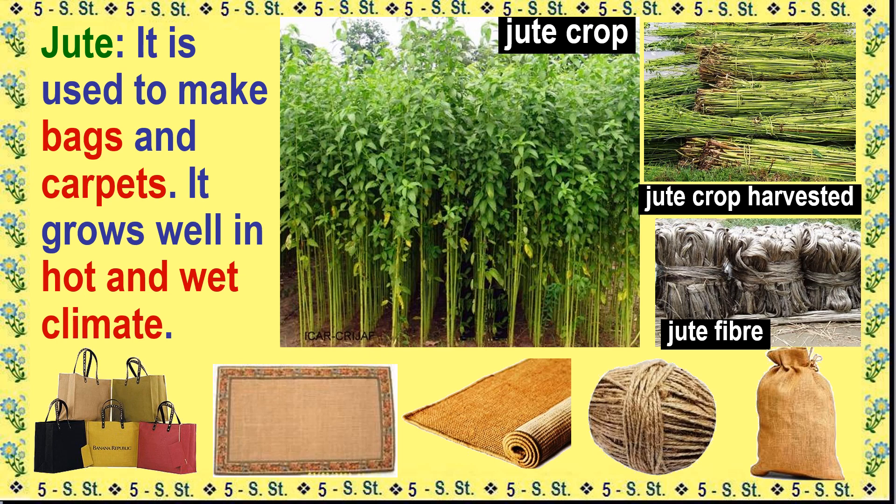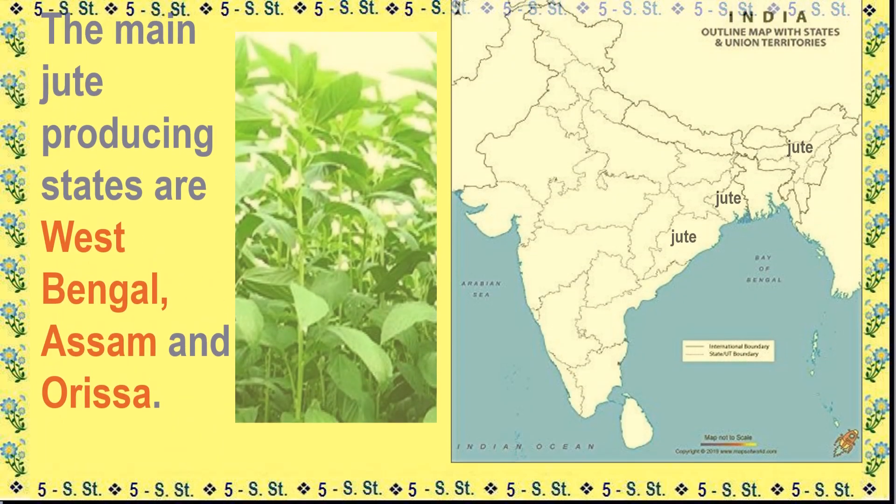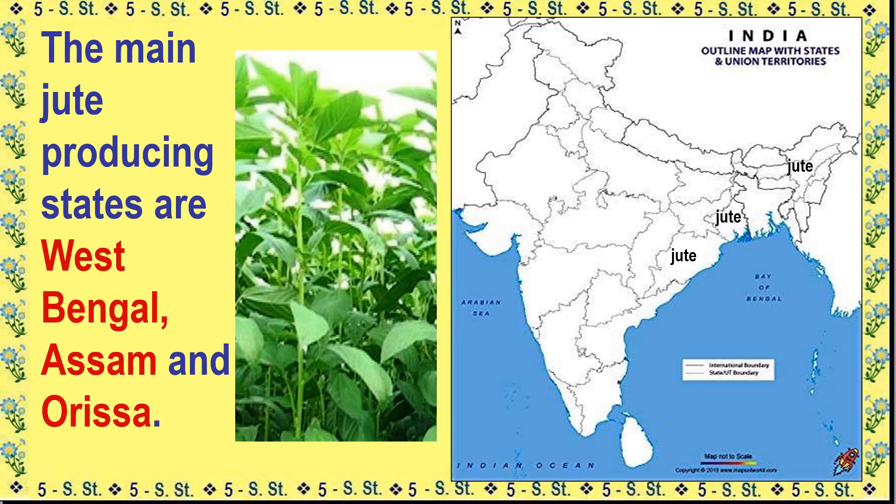Jute is used to make bags and carpets, and it grows well in a hot and wet climate. The main jute producing states are West Bengal, Assam, and Orissa.